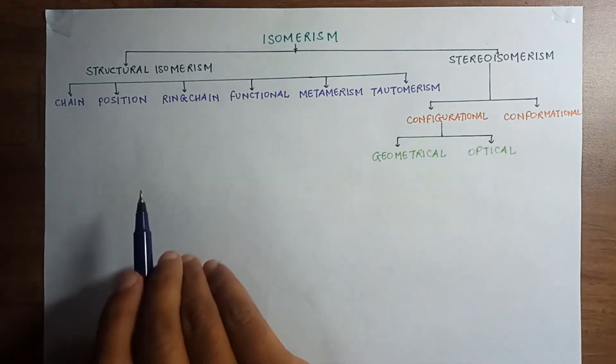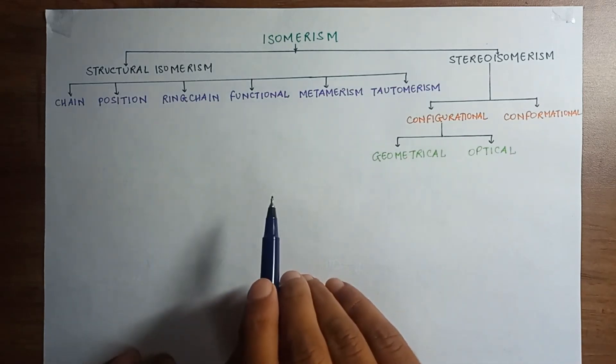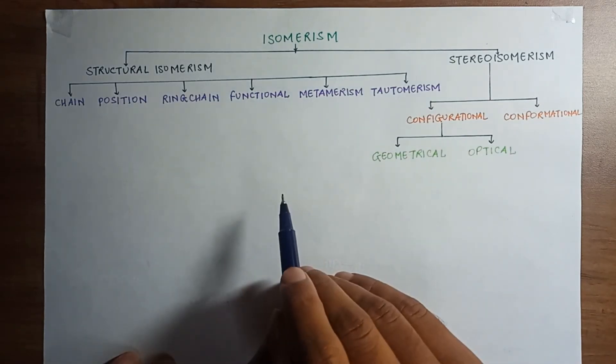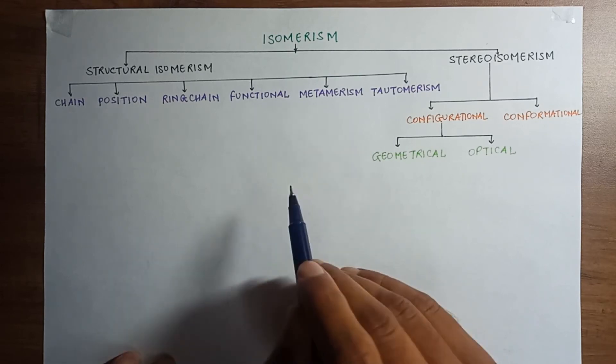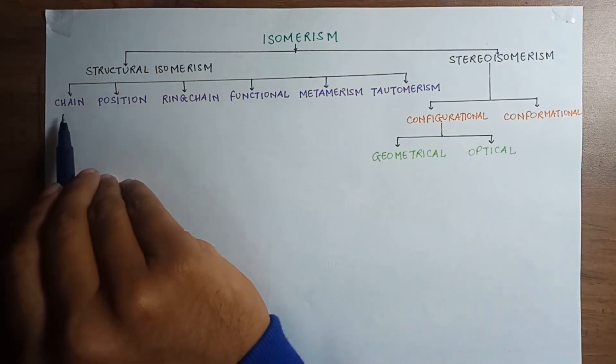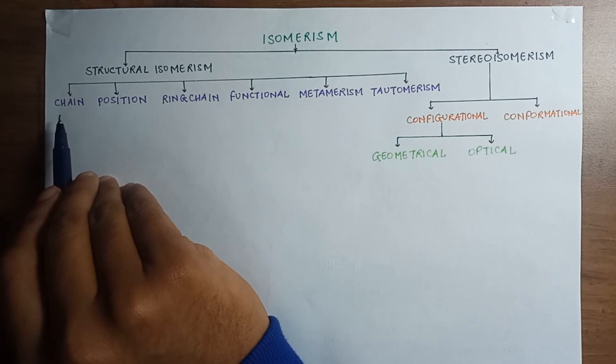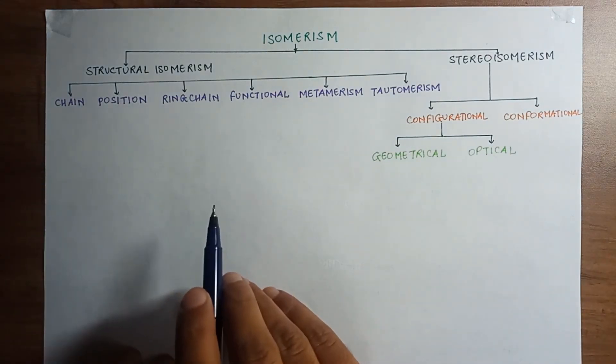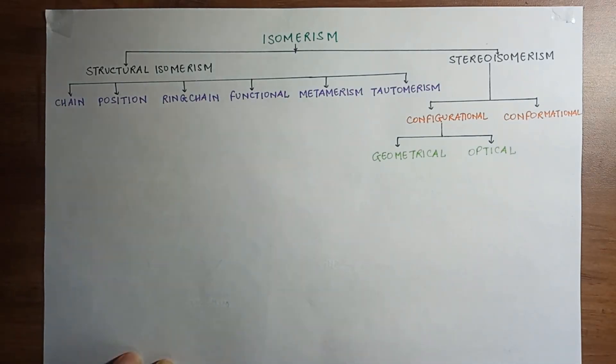So in the next video we will see each and every isomer, how they are defined and we will try to understand by taking examples. In the next video I will explain what are chain isomers. Thank you. Hope you have understood. If you have any doubts then please write in the comment section and I will try to solve it. If you find this video useful then please subscribe and press the bell icon for latest updates. Thank you.